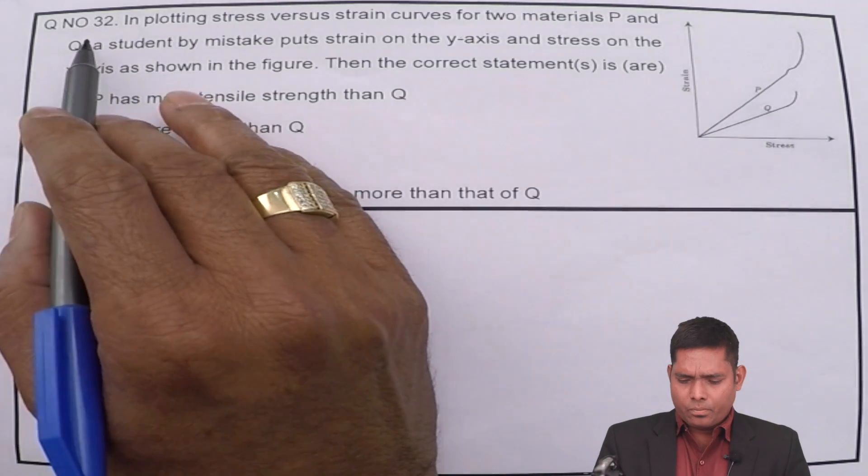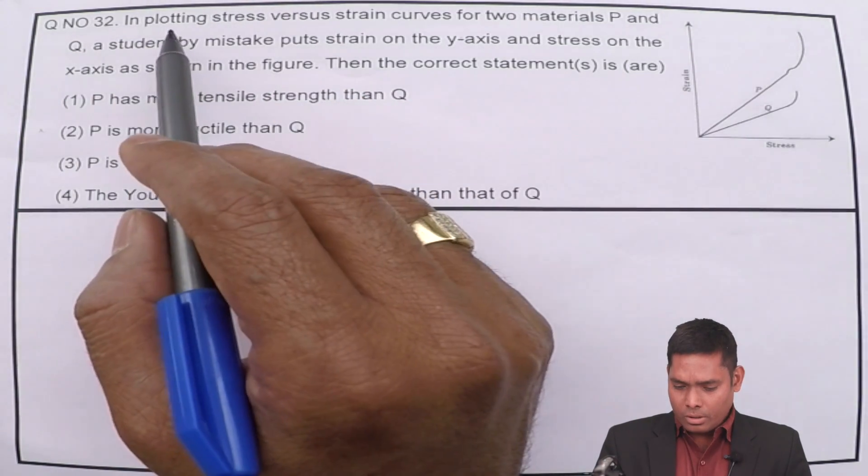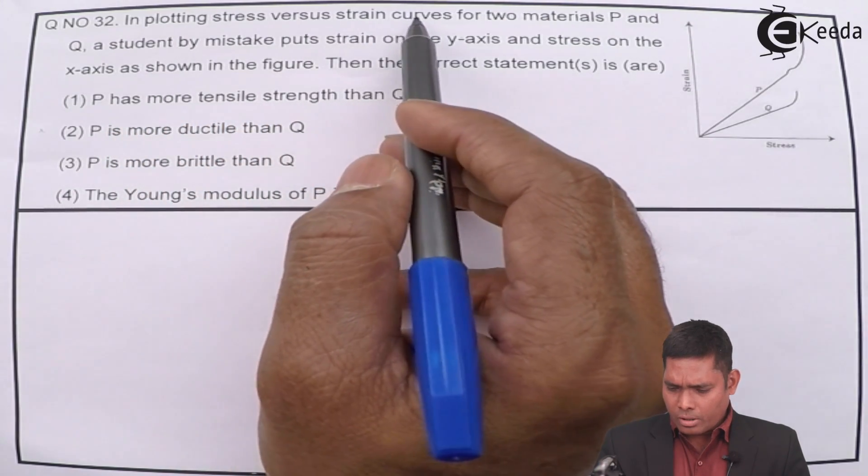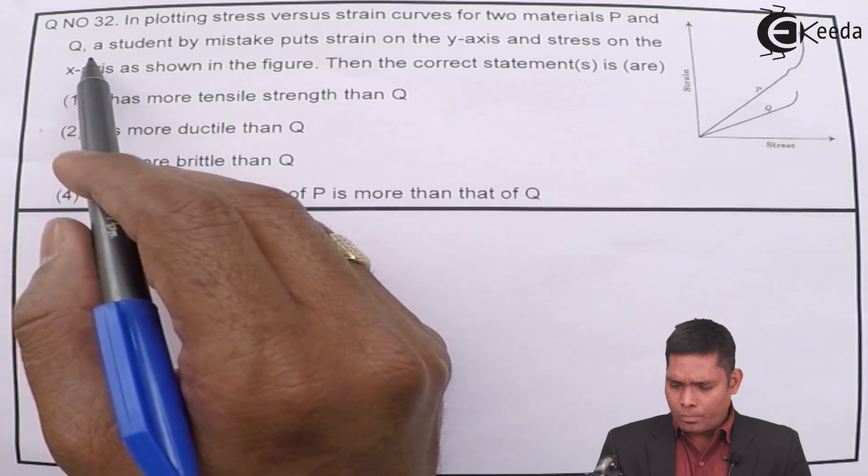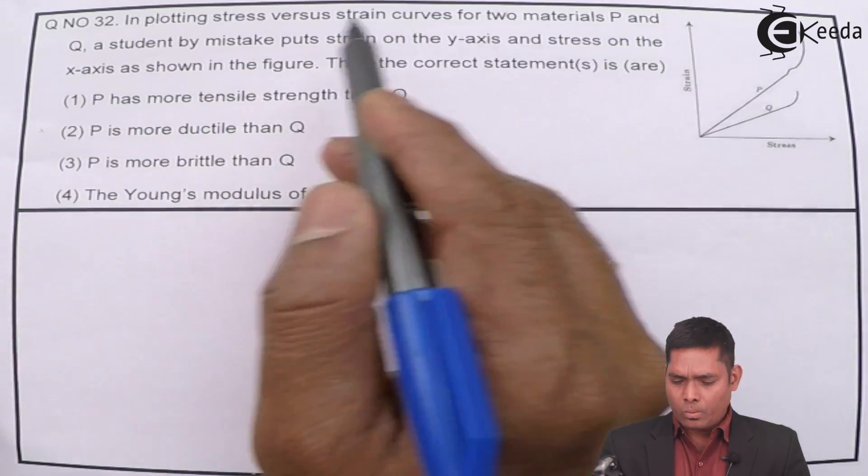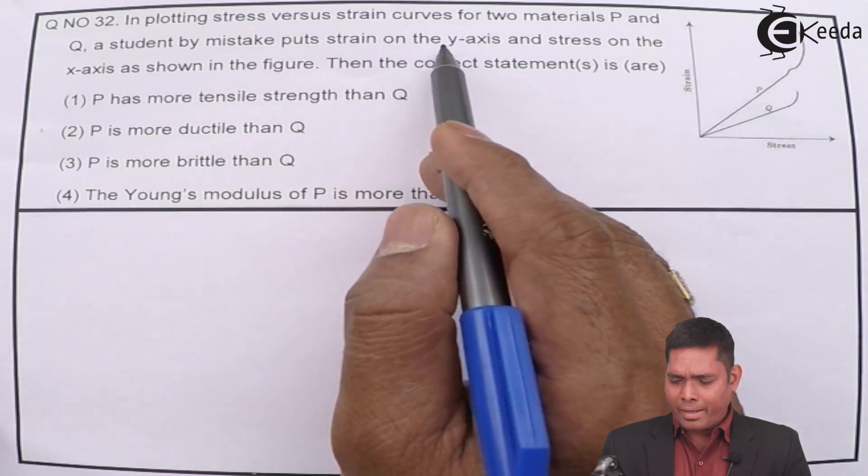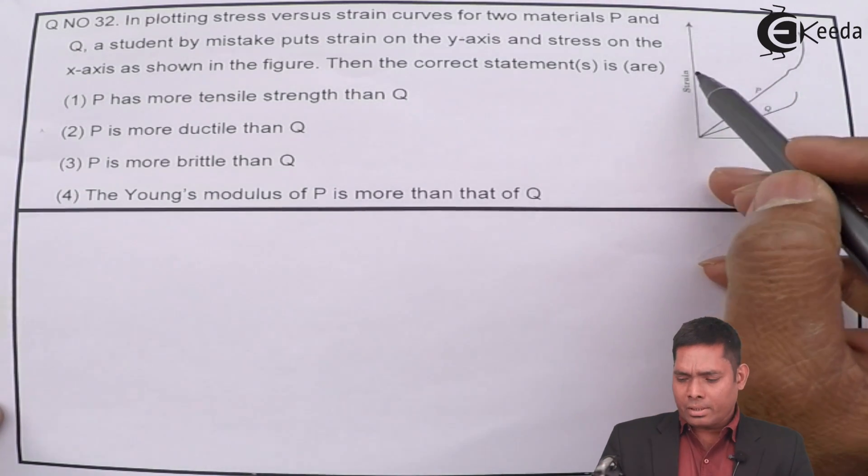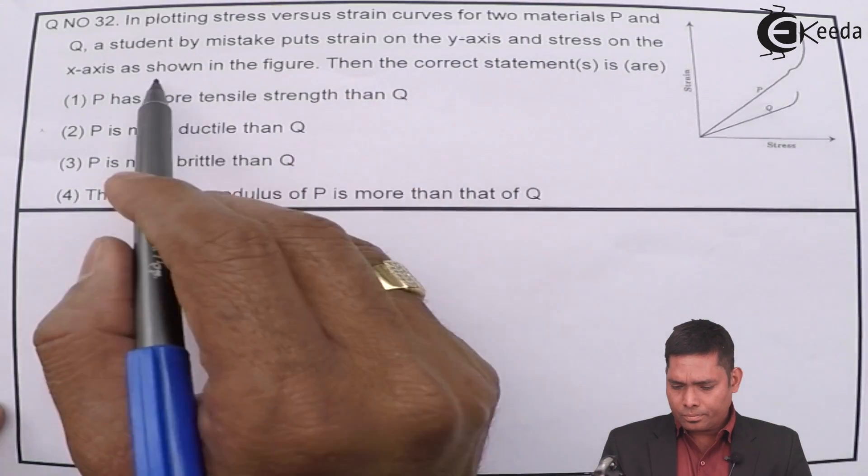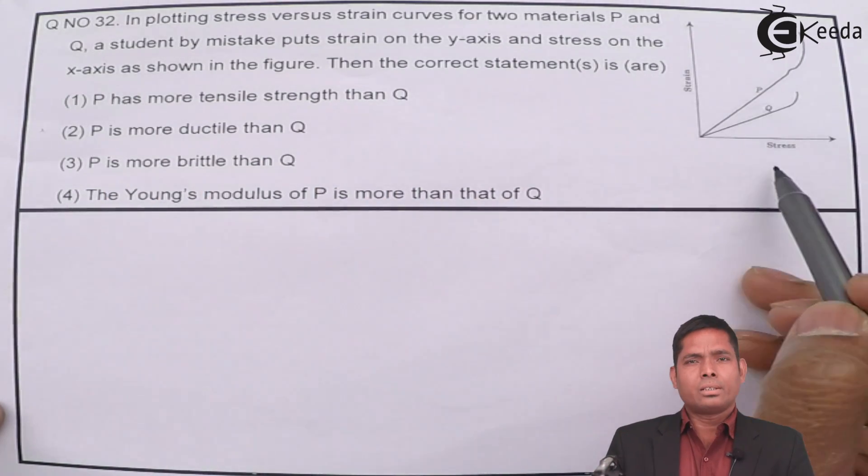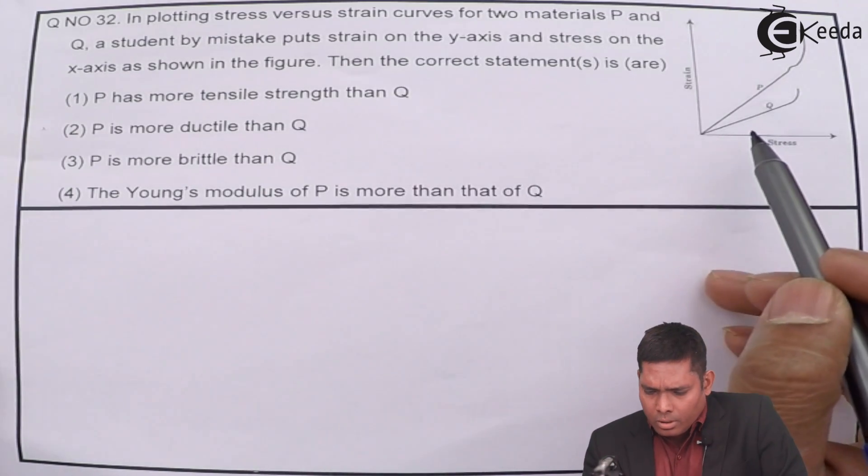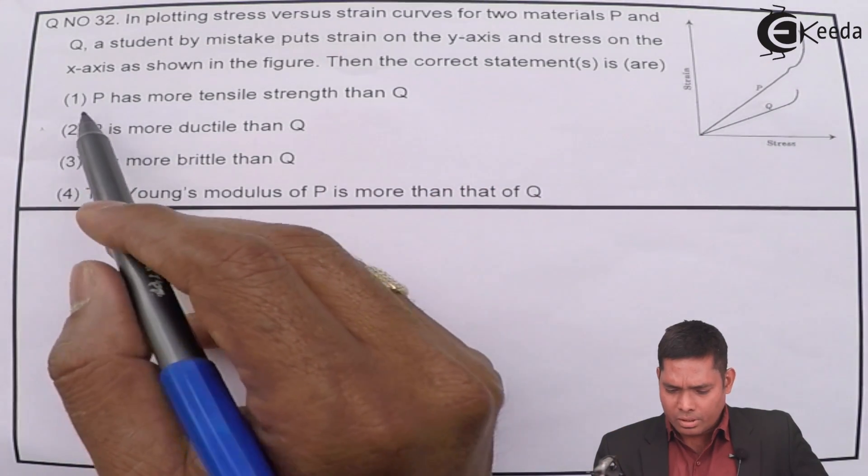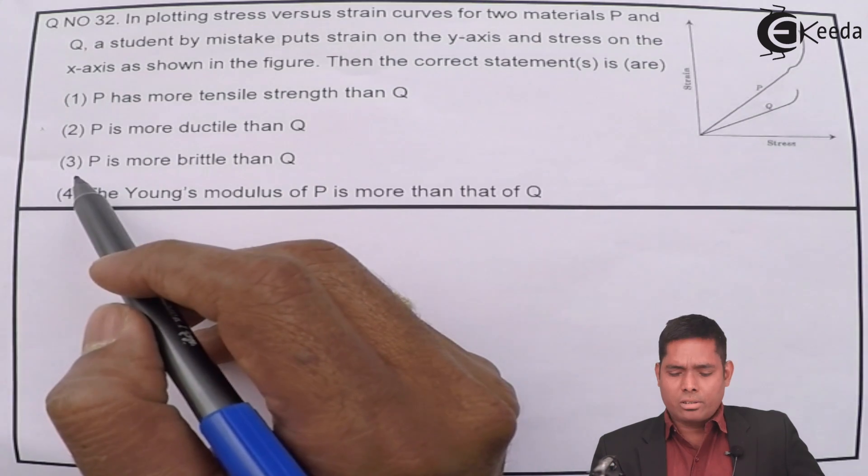Students, let us solve the next question. Question number 32. Let us see a theoretical question. It says that in plotting stress versus strain curves for two materials P and Q, there are two different materials given P and Q. A student by mistake puts strain on y-axis. On y-axis it takes strain and on x-axis it takes stress. Then the correct statements is or are. These are the statements and you have to find the correct statement.